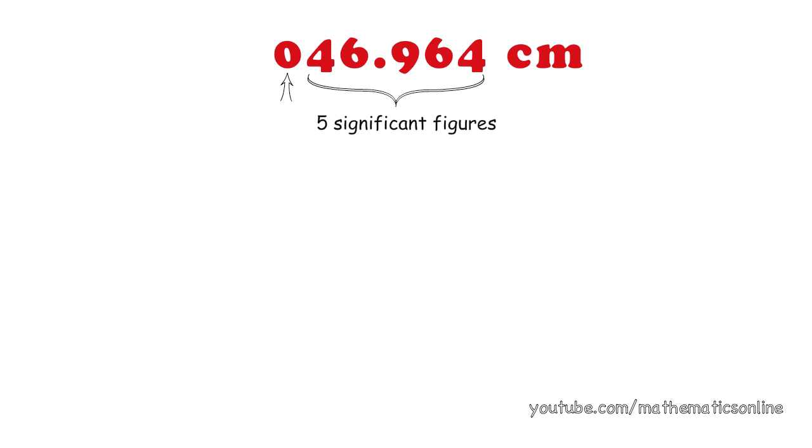Now not all digits in a measurement are considered significant. Suppose if we added a zero in front. How would this change the number of significant figures? This doesn't change anything. The number of significant figures is still 5. Zeros that are in front of a number are not considered significant.